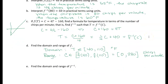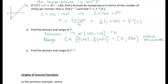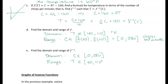Now let's think about the domain and range of the inverse. Remember we're just swapping the input and the output — our inverse takes chirp rate and gives us temperature. So the domain of the inverse is essentially the range of the original function. The input is now chirp rate, so the domain is zero to 280 chirps per minute. And the range is the temperature — from 40 to 110 degrees Fahrenheit.